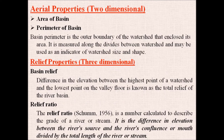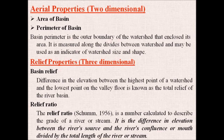Moving to the two-dimensional properties, the first and foremost for a drainage basin is the area of the basin — whatever area it covers. Then the perimeter, which is the measure of the outer boundary of the watershed enclosing its area. It is measured along the divides between watersheds and may be used as an indicator of watershed size and shape.